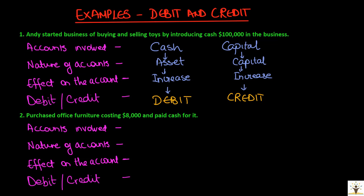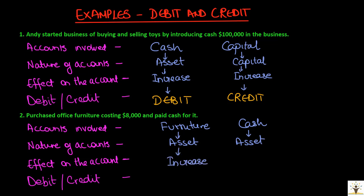Second transaction: purchased office furniture costing $8,000 and paid cash for it. The accounts involved are furniture and cash — both assets. Because of this transaction, the business is receiving furniture, so furniture is increasing. Since the business is paying cash, the cash asset is decreasing. When an asset increases it is debited — hence furniture will be debited. And when an asset decreases it is credited — hence cash will be credited.